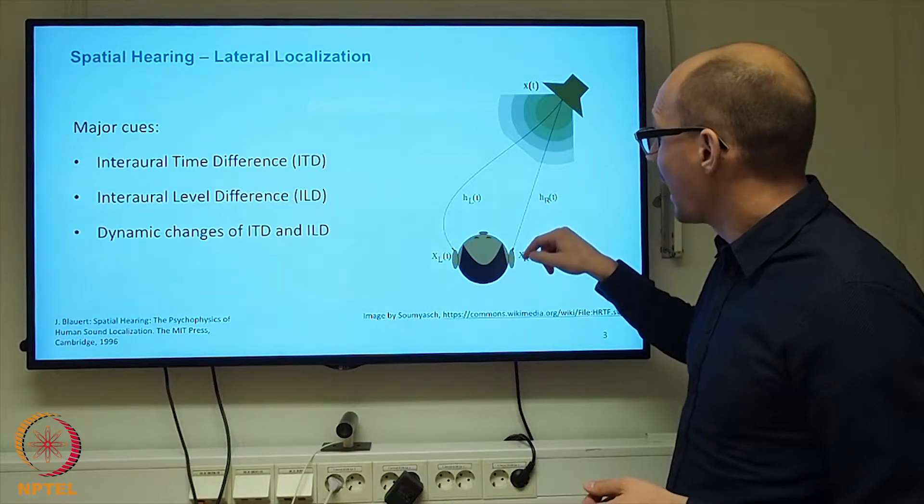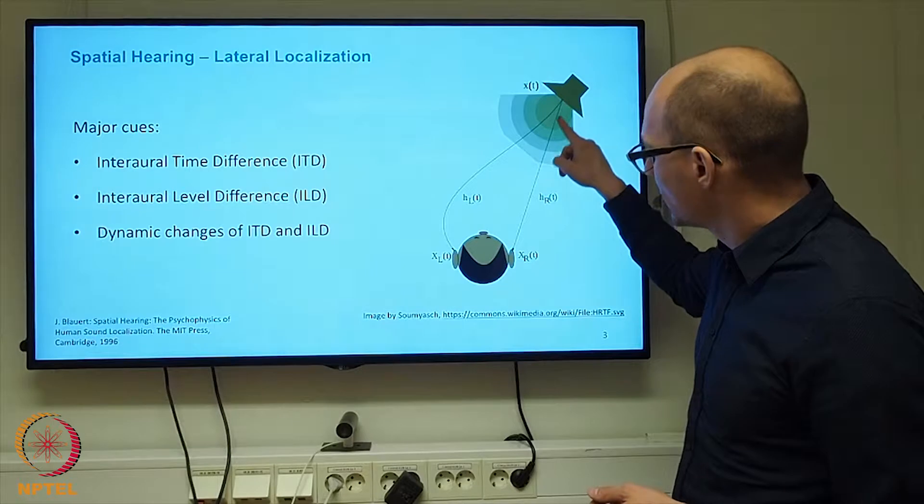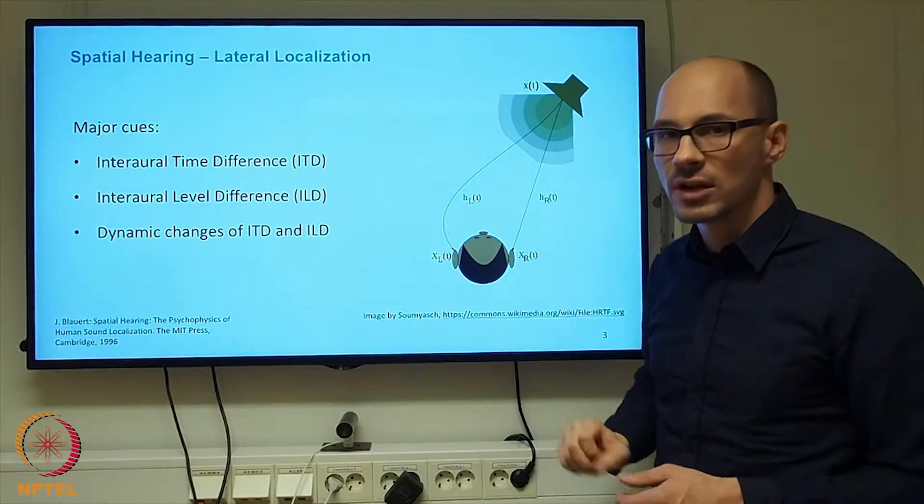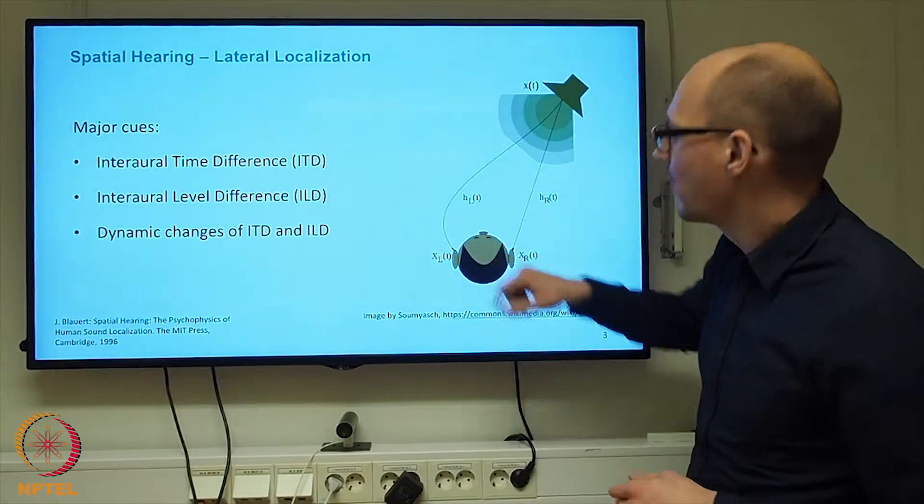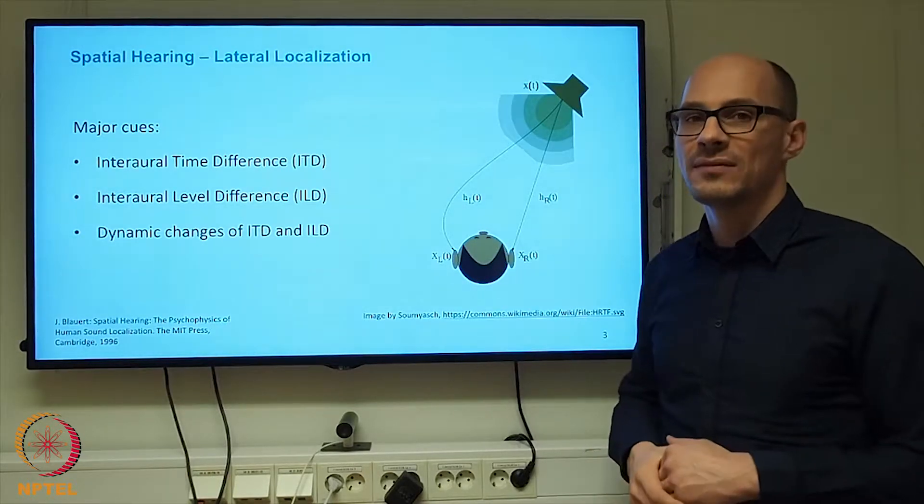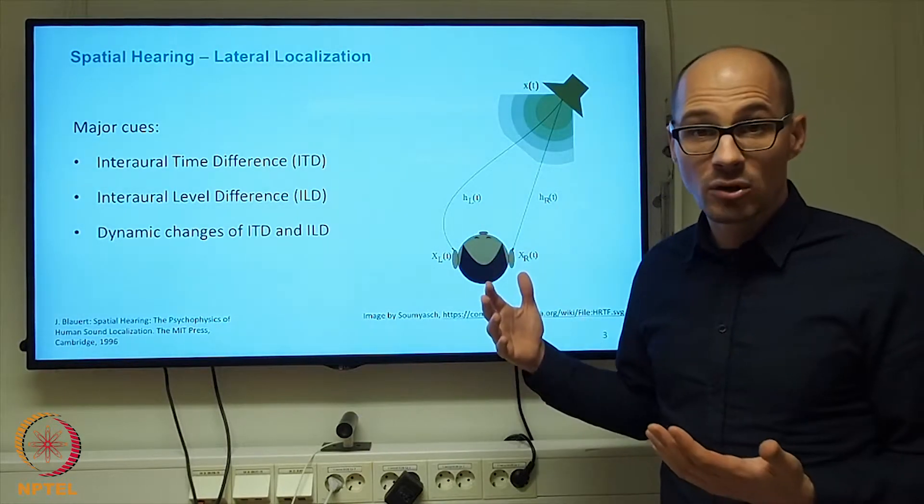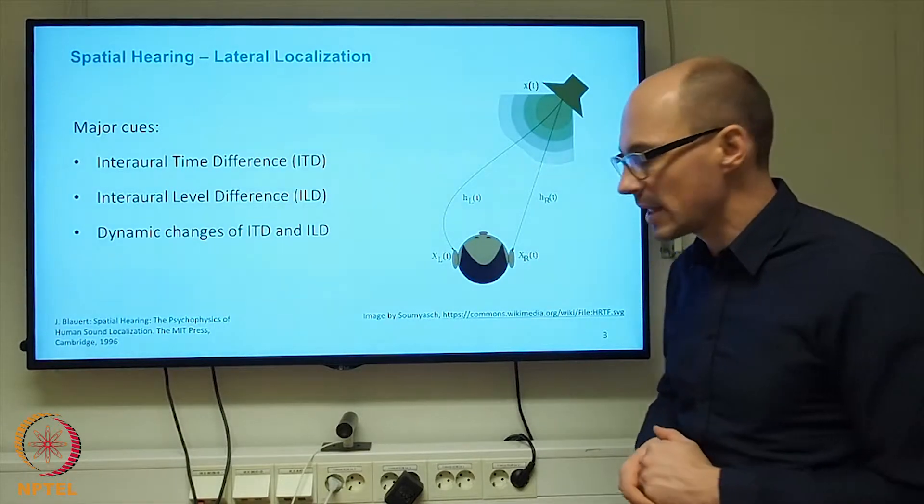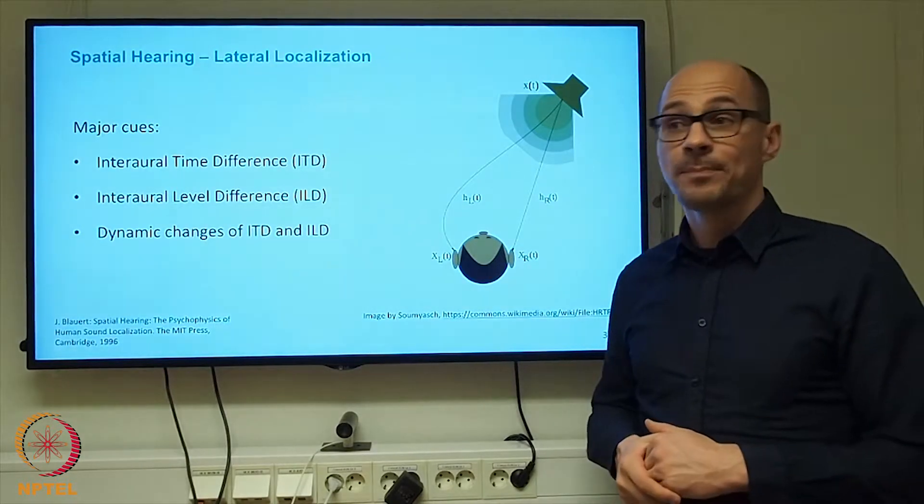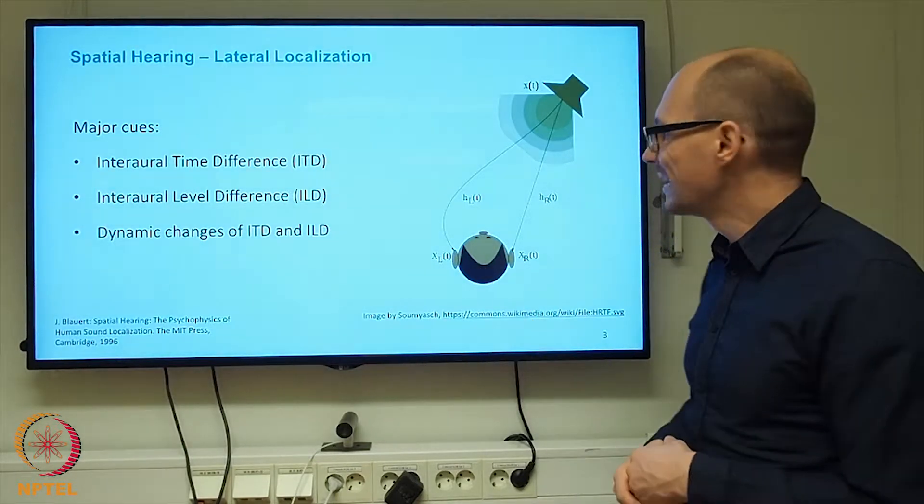then there will be some path length difference from the sound source to the ears. In this case, the path that the sound has to travel to the right ear is shorter than the path to the left ear. This causes a timing difference because the speed of sound is finite. It is in the order of 340 meters per second, or equivalently 30-something centimeters per millisecond.